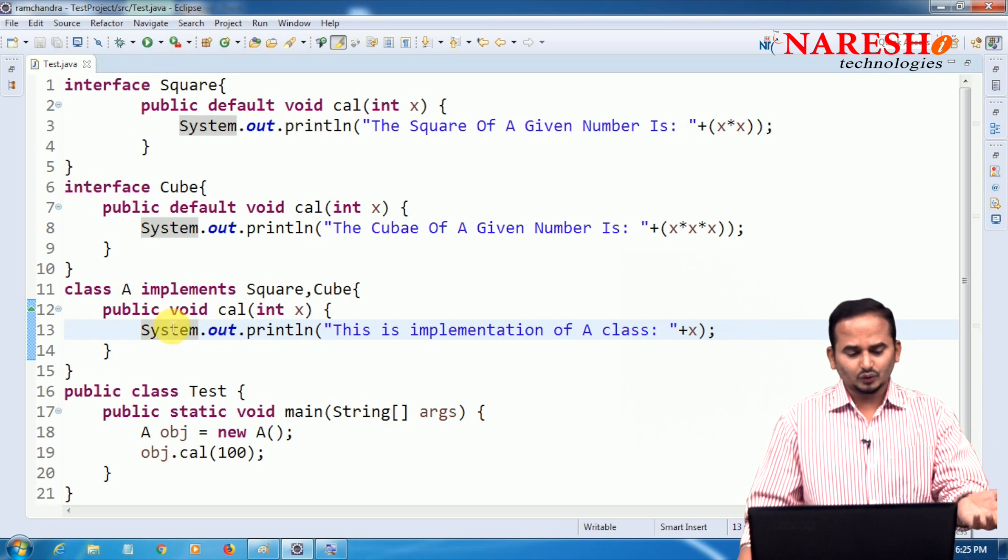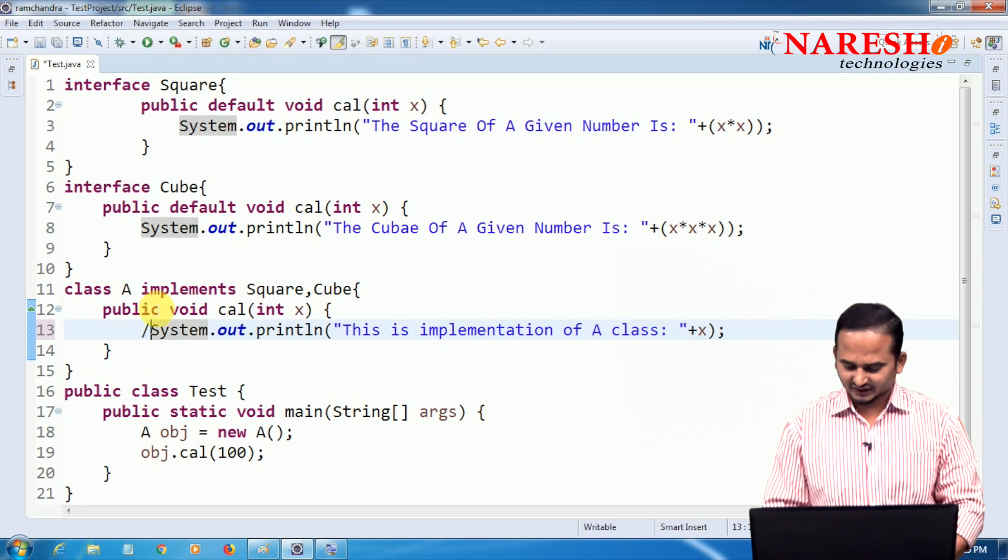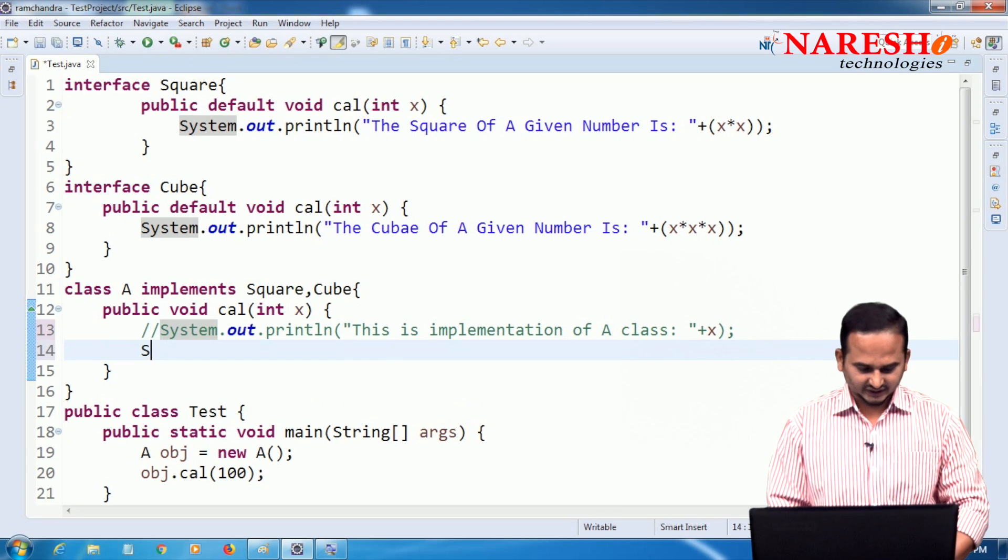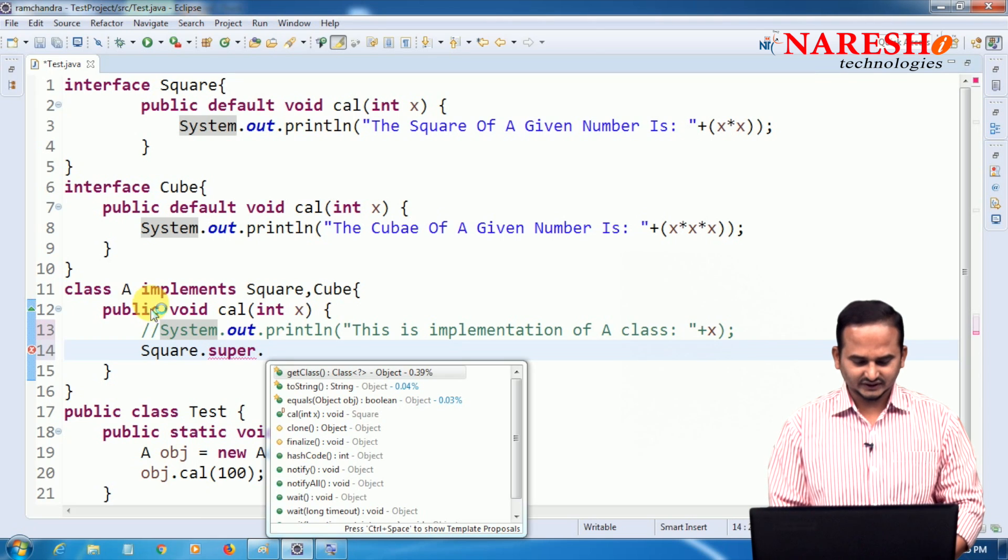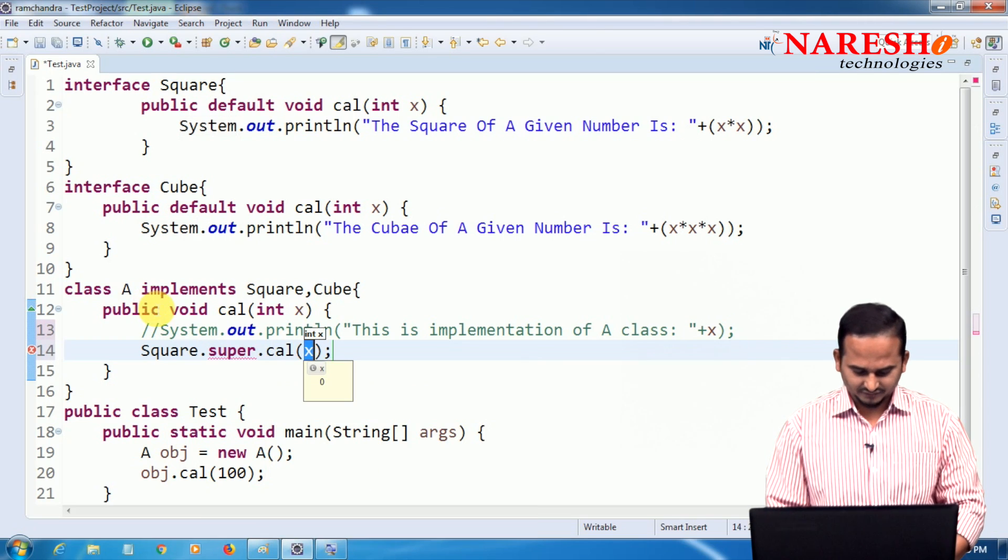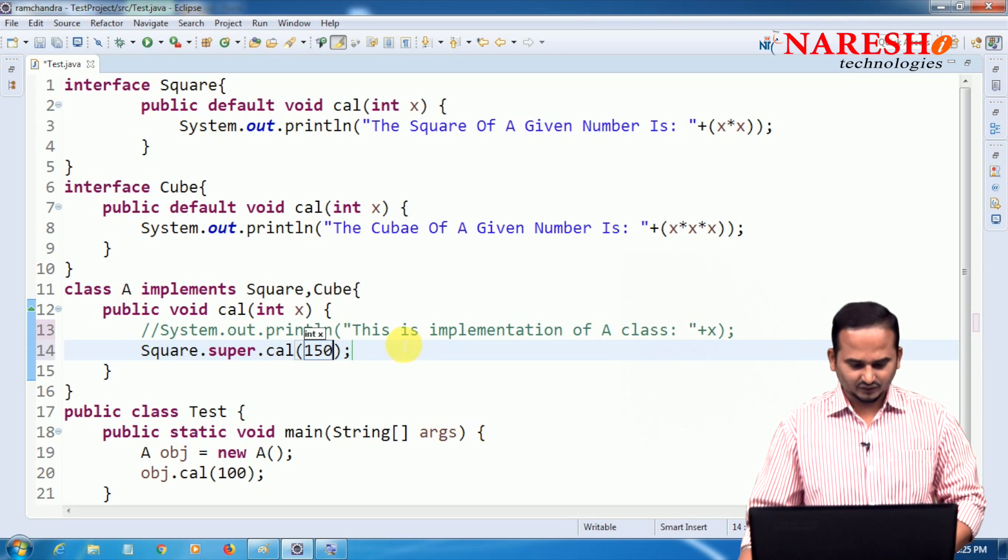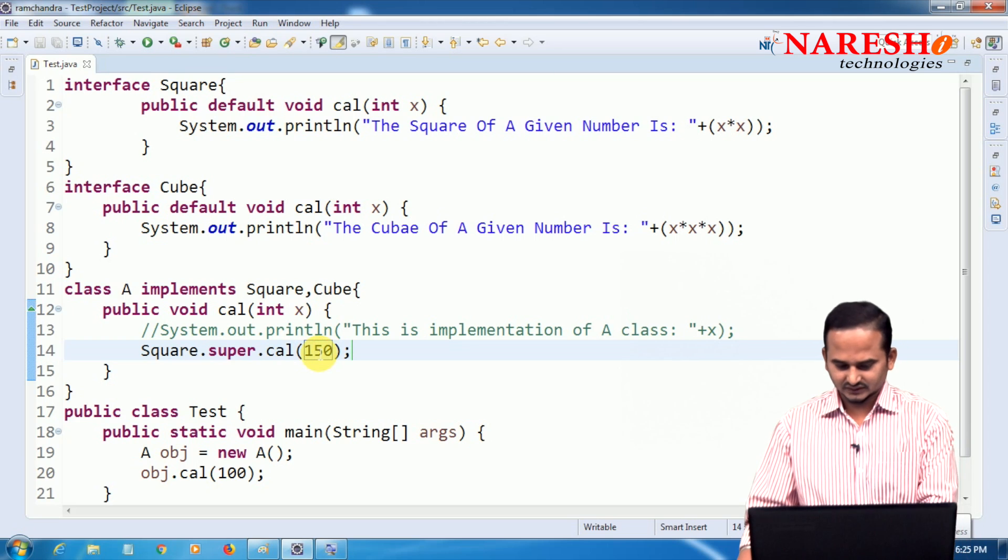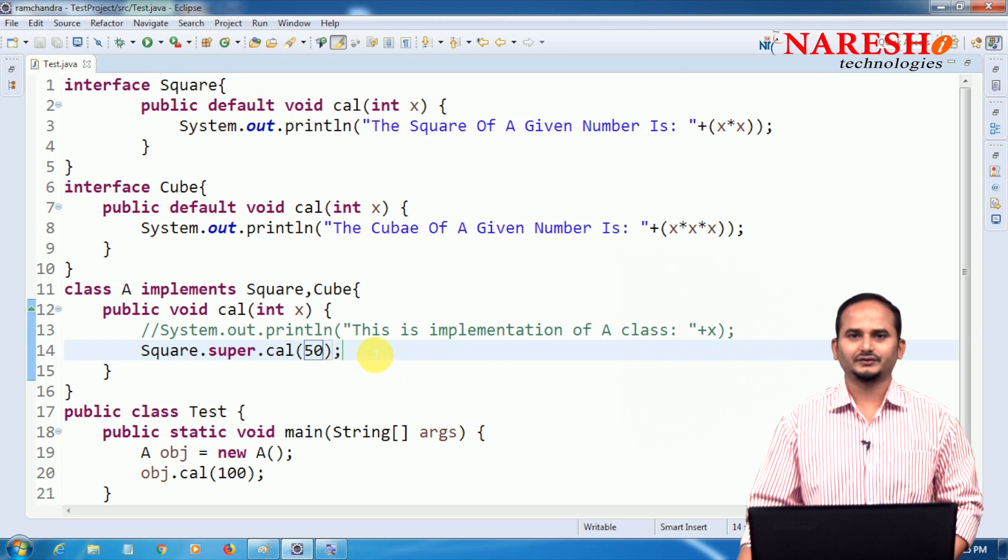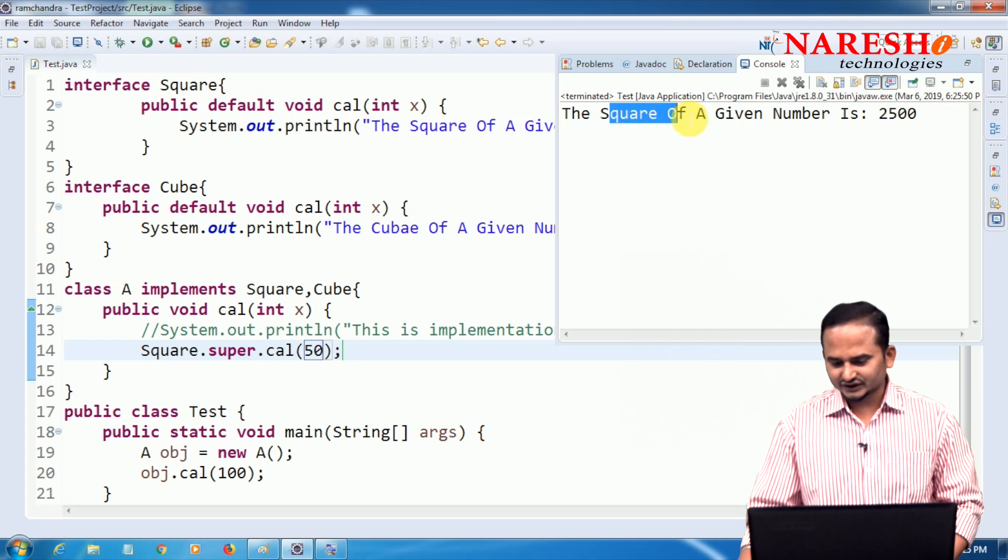But my intention is I don't want to execute my A class implementation. I want to execute only square related implementation, square interface. Then what should we do? Square.super.cal of 150. Let me give some small number for calculation, 50 into 50, 2500. Now it will execute the square of a given number is 2500.